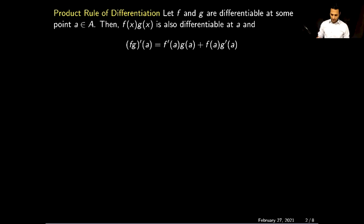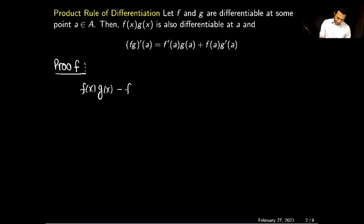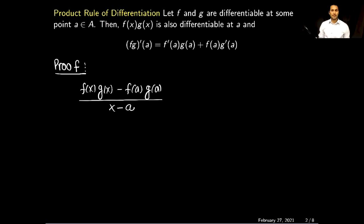Now let me give you the proof of this result. To prove this theorem, I will first start writing down this quotient: f(x) times g(x) minus f(a)·g(a), and the whole thing is divided by x minus a. To prove that f times g is differentiable at a, I need to show that the limit of this quotient as x approaches a exists.